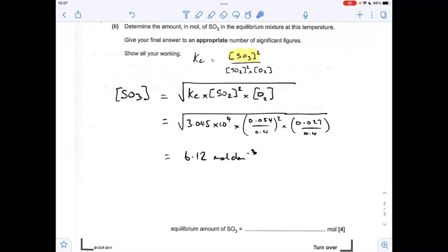So the SO3 concentration is coming out at 6.12 moles per decimeter cubed. We just need to turn that into moles by multiplying the concentration by the volume. That's coming out at 2.45 moles. Three significant figures is appropriate because the lowest number of significant figures in the data in the question is 3.